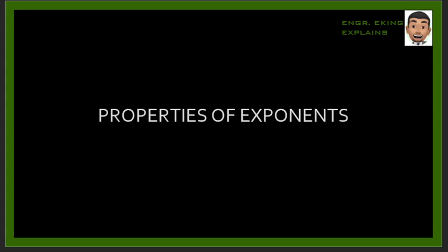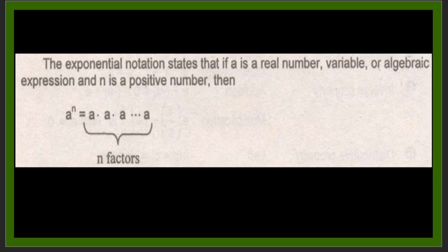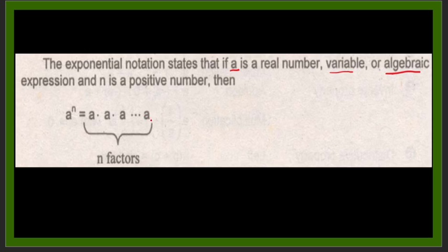In this video we'll be talking about properties of exponents — what an exponent is, and what properties or laws we can use when dealing with expressions involving exponents. The exponential notation states that if a is a real number, variable, or algebraic expression, and n is a positive number, then a to the n equals a times a times a, multiplied n times.